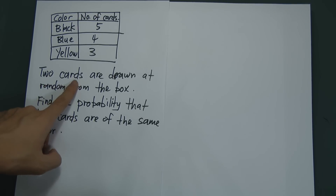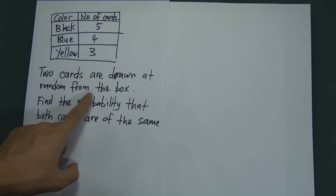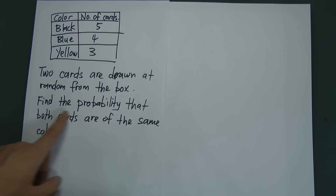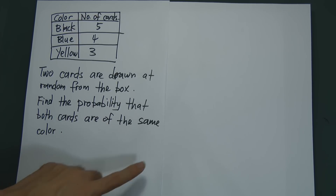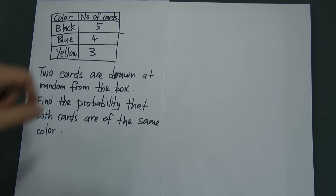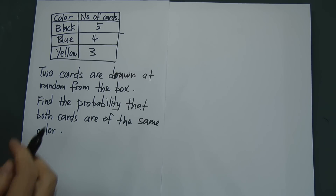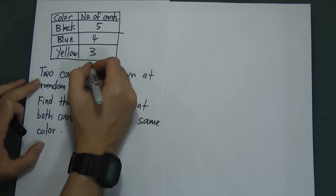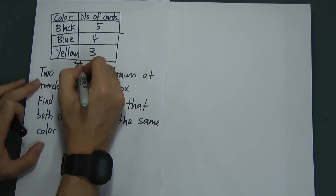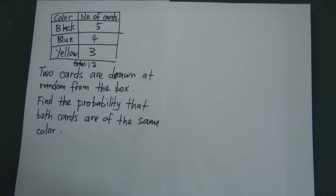The question says two cards are drawn at random from the box. Find the probability that both cards are of the same color. First, you must understand how many cards are in the box, so you sum them up: five plus four plus three equals 12, so the total is 12.